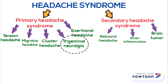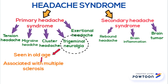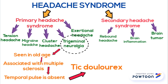Trigeminal Neuralgia is a type of Facial Pain. It is seen in Old Age and is associated with Multiple Sclerosis. In this condition, Temporal Pulses are absent and there is a Facial Muscle Spasm called Tic Douloureux. The treatment option available is Carbamazepine.